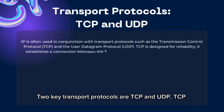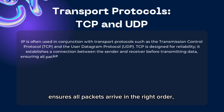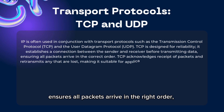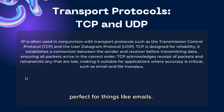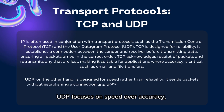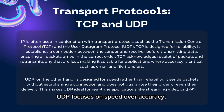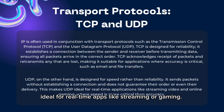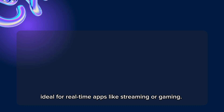Two key transport protocols are TCP and UDP. TCP ensures all packets arrive in the right order, perfect for things like emails. UDP focuses on speed over accuracy, ideal for real-time apps like streaming or gaming.